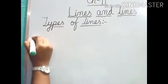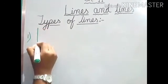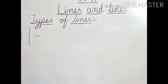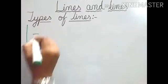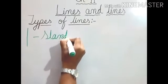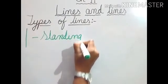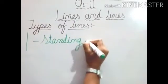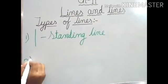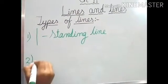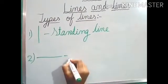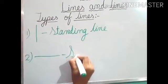Number one — this is what type of line? Can you tell me? Standing line. This line we call Standing Line. Next, number two. This line is Sleeping line.